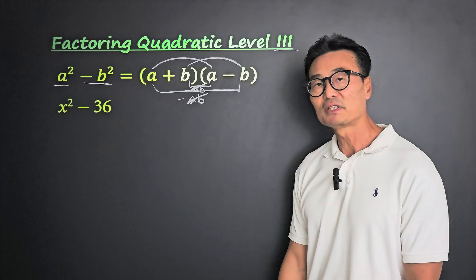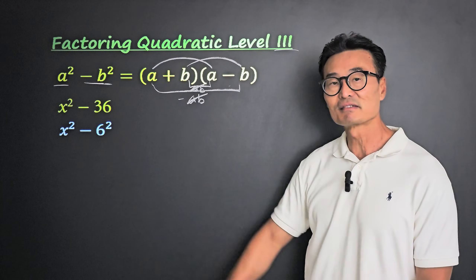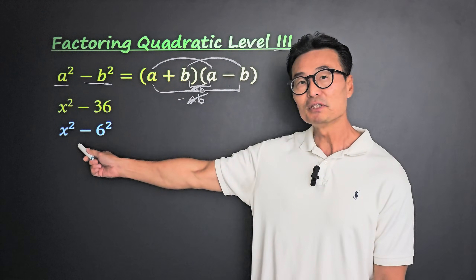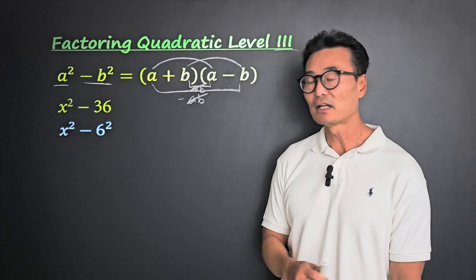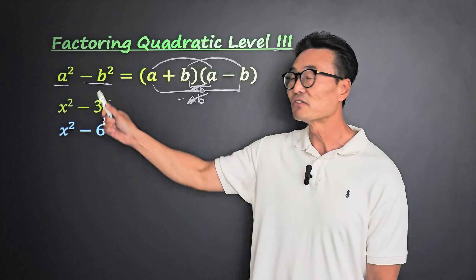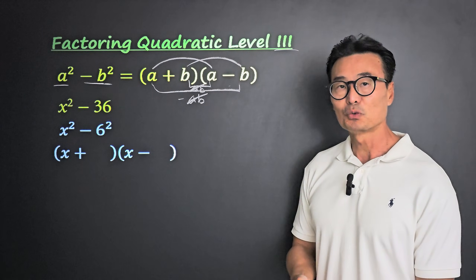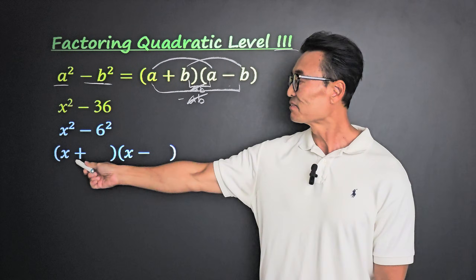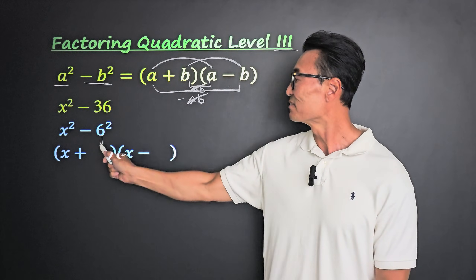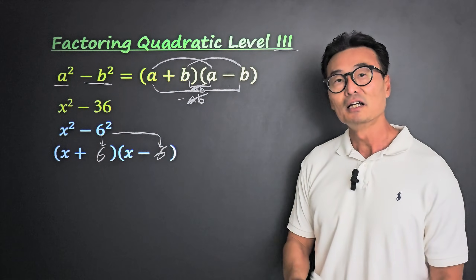Take a look at this example. When we're given x squared minus 36, we rewrite it as x squared minus 6 squared. Because we have it in the format of a squared minus b squared with nothing in between, we use the difference of squares formula, starting with x plus and x minus, putting 6 here and 6 here — and we're done.